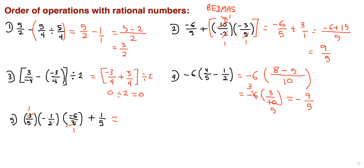Nothing else can reduce, so 1 times 1 times 3 is just 3, and 5 times 1 times 1 is 5. We have two negatives — an even number — so the answer is positive. Therefore it's 3 over 5 plus, we still have the 1 over 5 there, and since we already have a common denominator, we just get 4 over 5.